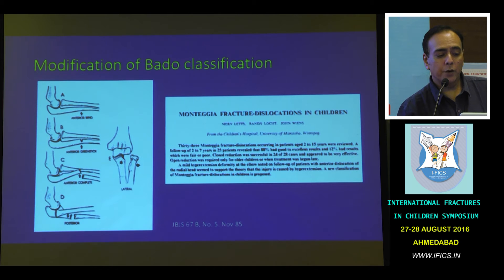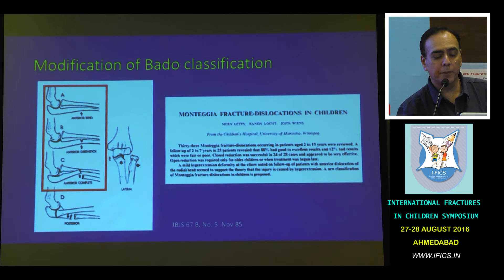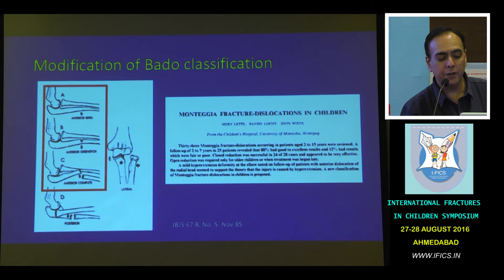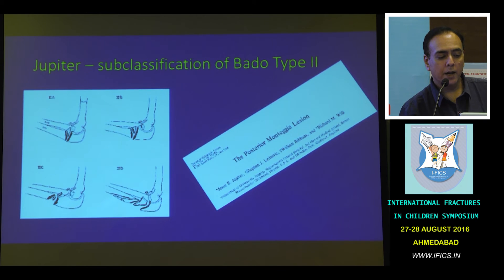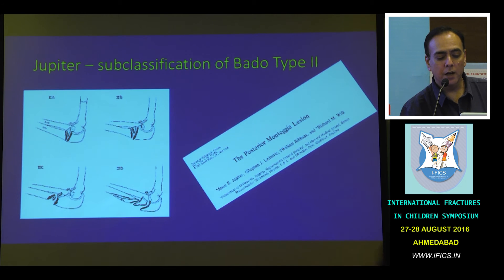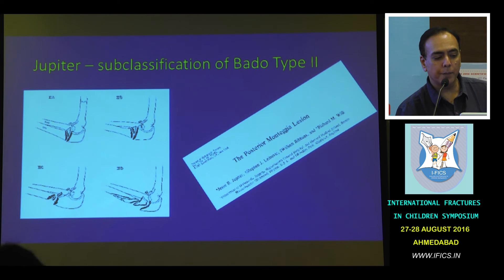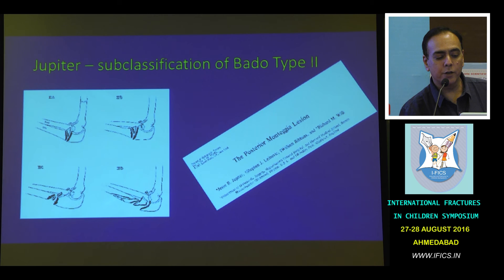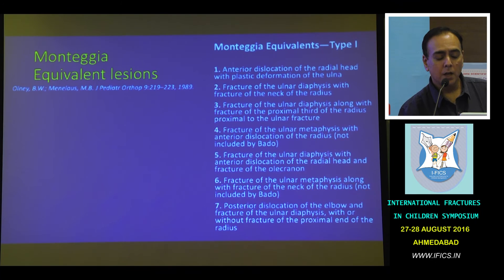A modification of Bado's classification was proposed by Letts, who divided Bado Type 1 into three subtypes: plastic deformation, greenstick fracture, and complete fracture. The remaining two subtypes were similar to Bado's. Jupiter subclassified Type 2 posterior lesions — more common in adults — into four subtypes based on the location of the ulnar fracture and the degree of combination.